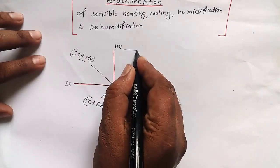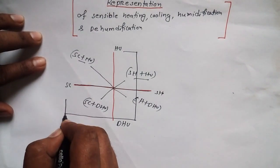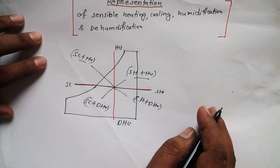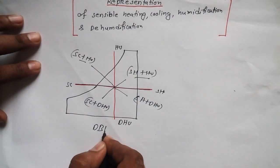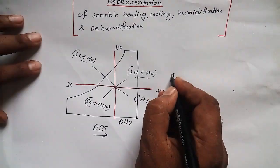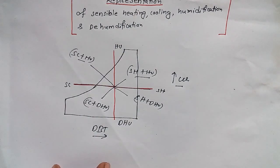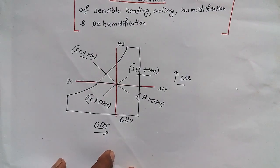This is simple. Just draw a psychometric chart on this table only. You can easily understand what I did. So this is DBT and this one is specific humidity. As simple as that. You need to understand what I am doing here.